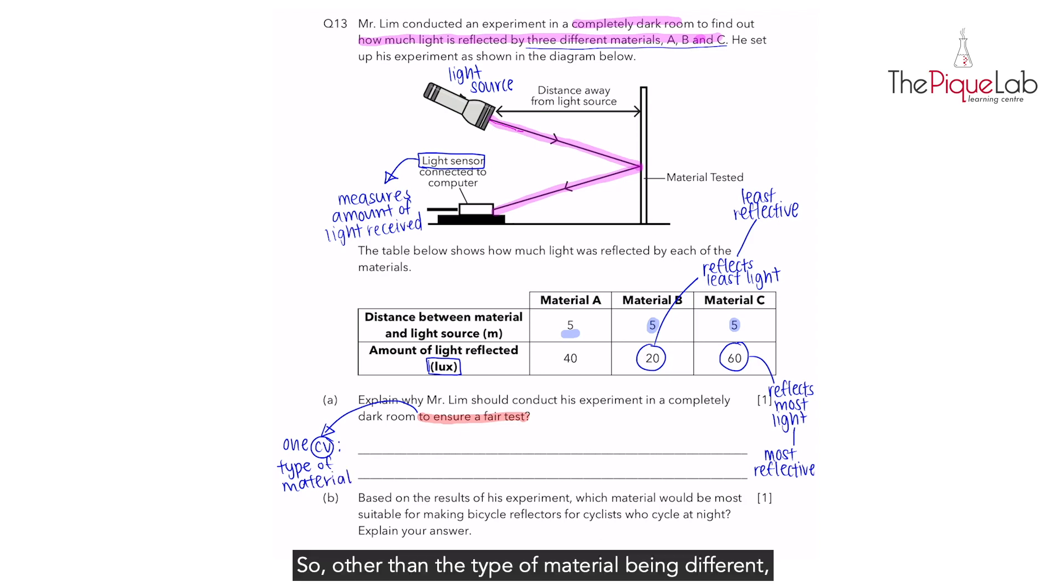Other than the type of material being different, everything else should be kept the same. So why do we place this setup in a dark room? Remember, in order for us to get our result, we have to have the light sensor there to measure the amount of light received. The amount of light received is actually the amount of light that is reflected off the material. Imagine if we didn't place this setup in a dark room, we place it in a room with maybe a window, and there is light passing through the window into the room. Would this affect the experiment results?